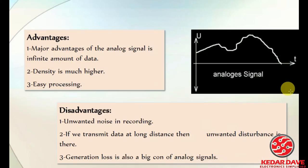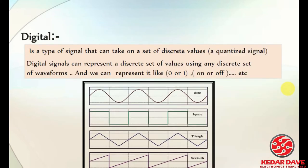There are several advantages and disadvantages of analog over digital. Analog signals have unwanted noise in recording, and when transmitting data over long distances there are unwanted disturbances. Generation loss is also a big disadvantage of analog signals — that is a major problem with analog.